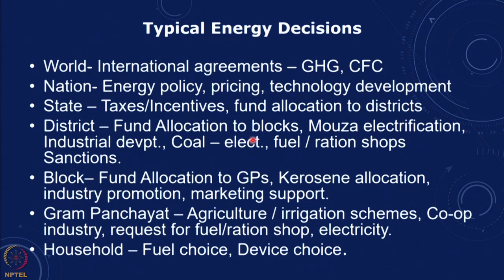At the block level, allocations go to villages and cover kerosene allocation, industry promotion, marketing support, gram panchayats, agriculture, irrigation schemes, cooperative industry, requests for ration shops, fuel shops, and electricity supply. At the household level, decisions are about fuel choice and device choice. This gives us a hierarchy of different kinds of decisions and the decision-making process, and one can look at how policies impact and at what level they have effect.